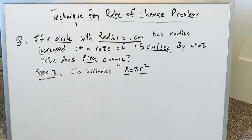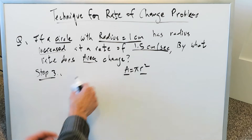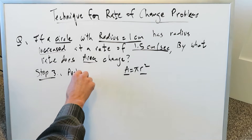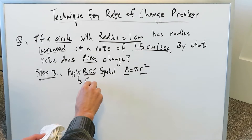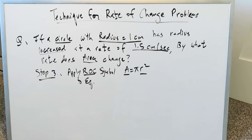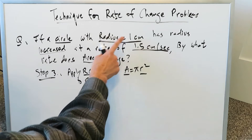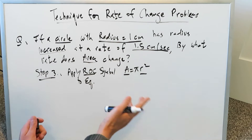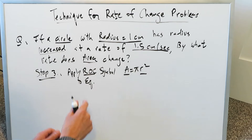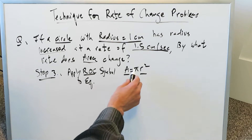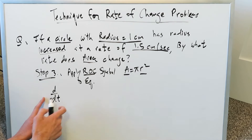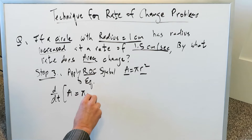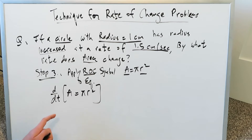Step 3 is an interesting step: you want to apply the rate of change (ROC) symbol to the equation. We know the radius is increasing, so logically the area will increase as well. We apply a rate of change symbol and do everything with respect to time. The derivative with respect to time applied to A = πr² will affect both identified variables — area and radius.